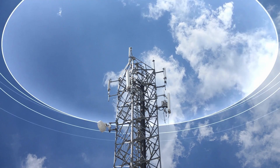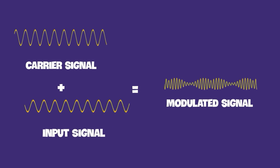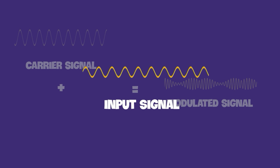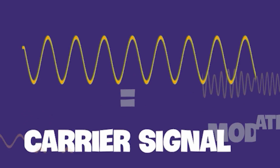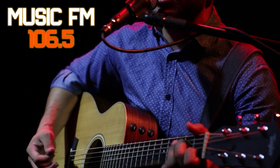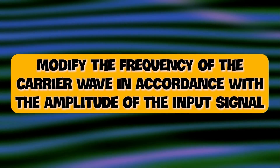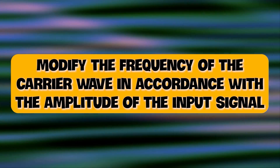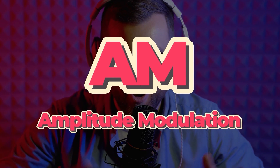If you ran a radio station, transmitting information via radio waves would involve superimposing your input signal — consisting of audio information such as music and voices — onto a carrier wave. If your radio station primarily broadcasts music, you'll likely use frequency modulation, FM, to modify the frequency of the carrier wave in accordance with the amplitude of the input signal. For a news station, the preferred choice would be amplitude modulation, or AM.